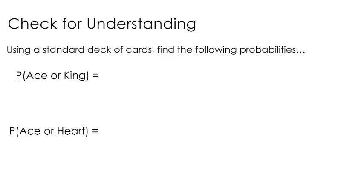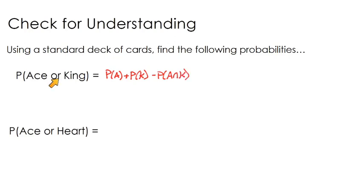Using a standard deck of cards, what's the probability of drawing an ace or a king? That equals the probability of an ace plus the probability of a king minus the probability of an ace and a king. But there are no cards that are both aces and kings — these are mutually exclusive situations. So the probability of drawing an ace is 4 over 52, plus 4 over 52 for a king, giving 8 out of 52. Simplified, that's two-thirteenths, or roughly 15%.